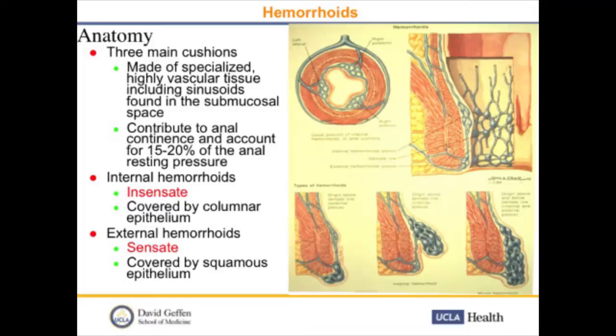Hemorrhoids consist of three main cushions. They're made of specialized, highly vascular tissue including sinusoids, which are found in the submucosal space, and they contribute to anal continence and account for about 15 to 20 percent of the anal resting pressure. This is really important because before I do any operative procedures on patients, I make them aware of that. Patients who come in with fecal incontinence or minimal leakage may complain of incontinence after excisional hemorrhoidectomy in particular.